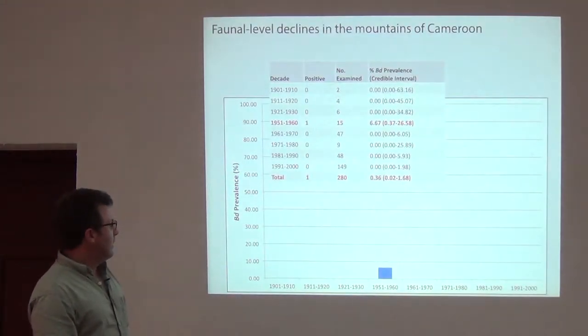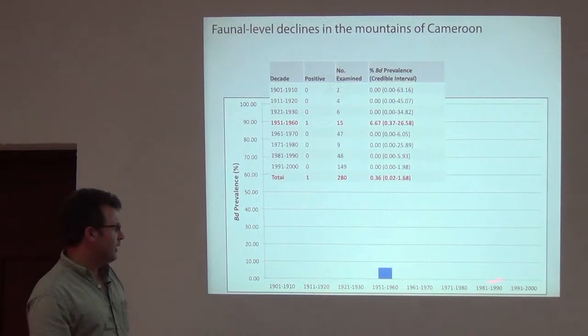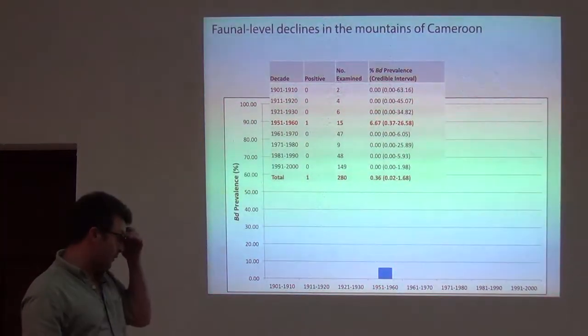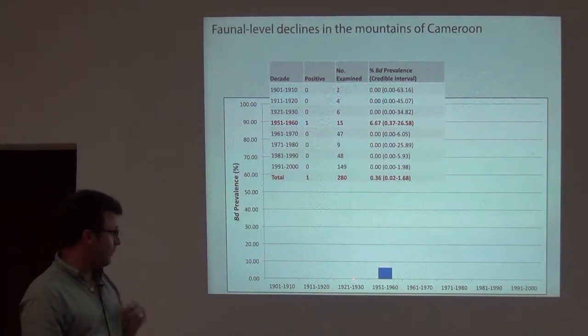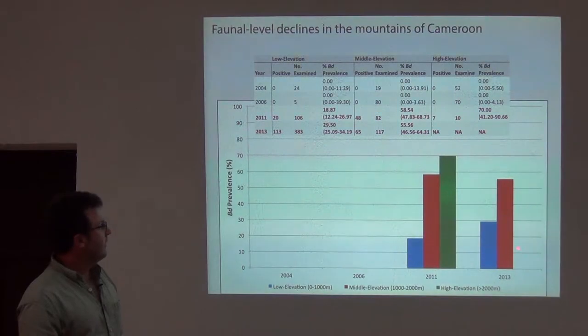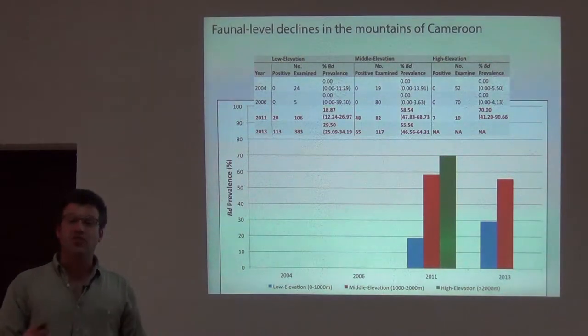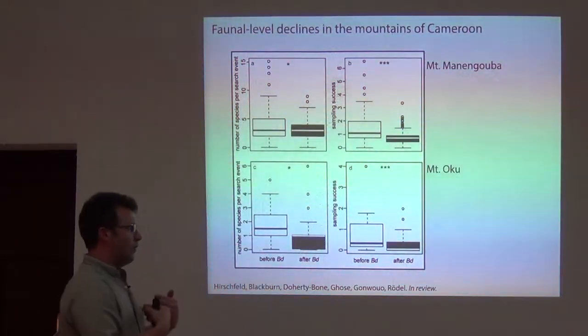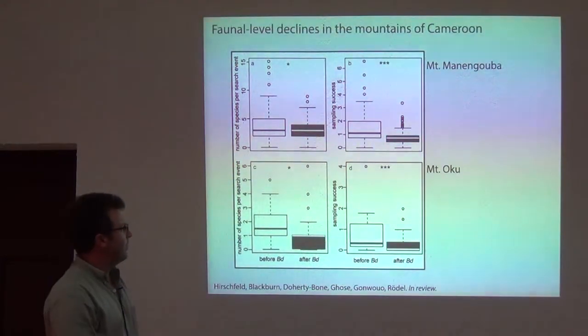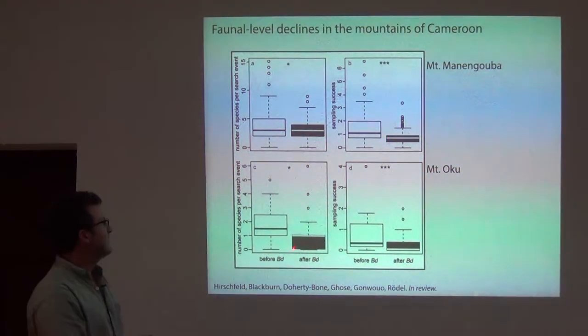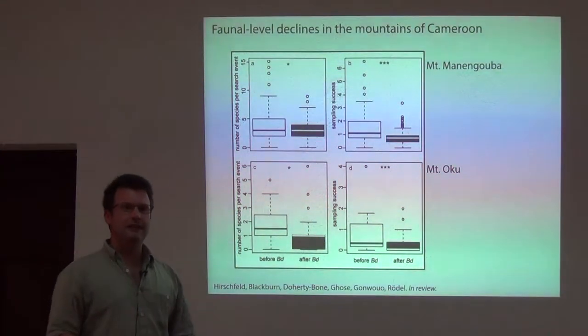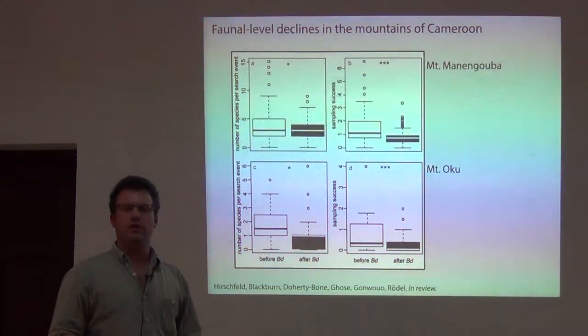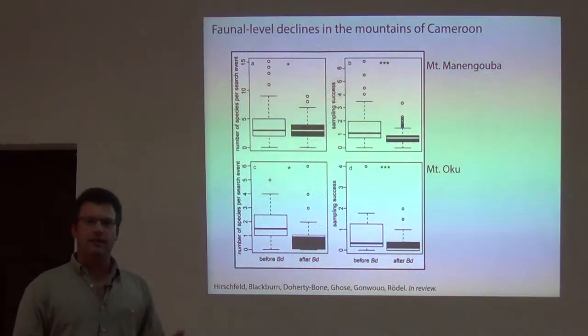So just to give you an idea of what it looks like, when we screen chytrid fungus over the last century, we have basically one positive that we've been able to find based on museum collections for Cameroon. So they're very uncommon. And then in 2011, 2013, we can find 30 to 50% of the specimens have chytrid fungus. And so if we bin our observations into before the first observation and after the first observation on both Mt. Mananguba and Mt. Oku, we actually see that even the number of species that we find every time we go out is significantly less now than it was before there was chytrid fungus.